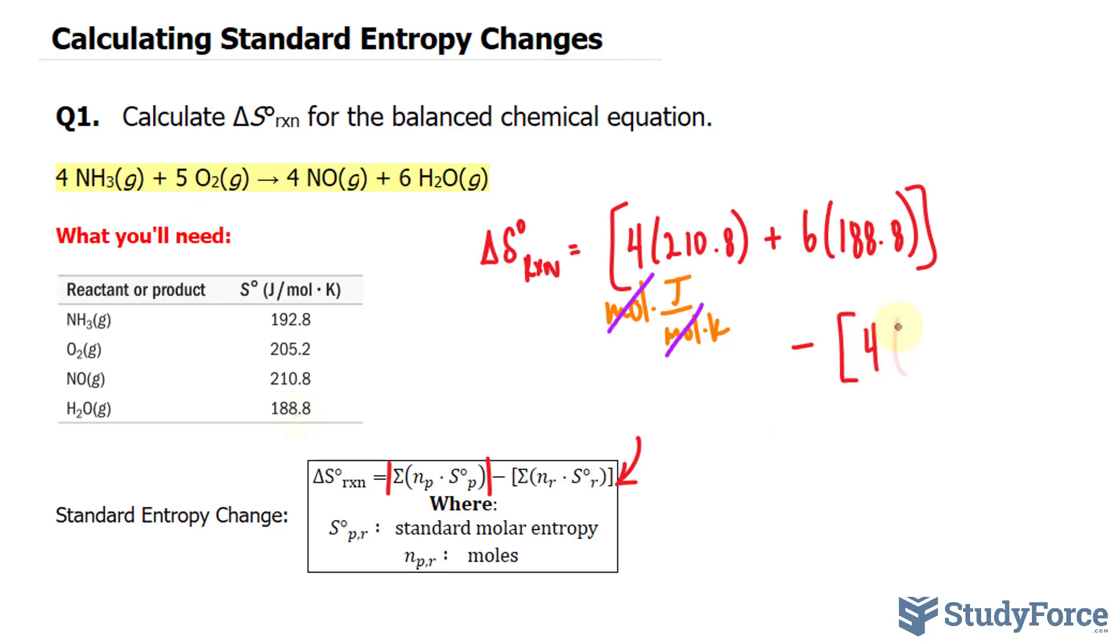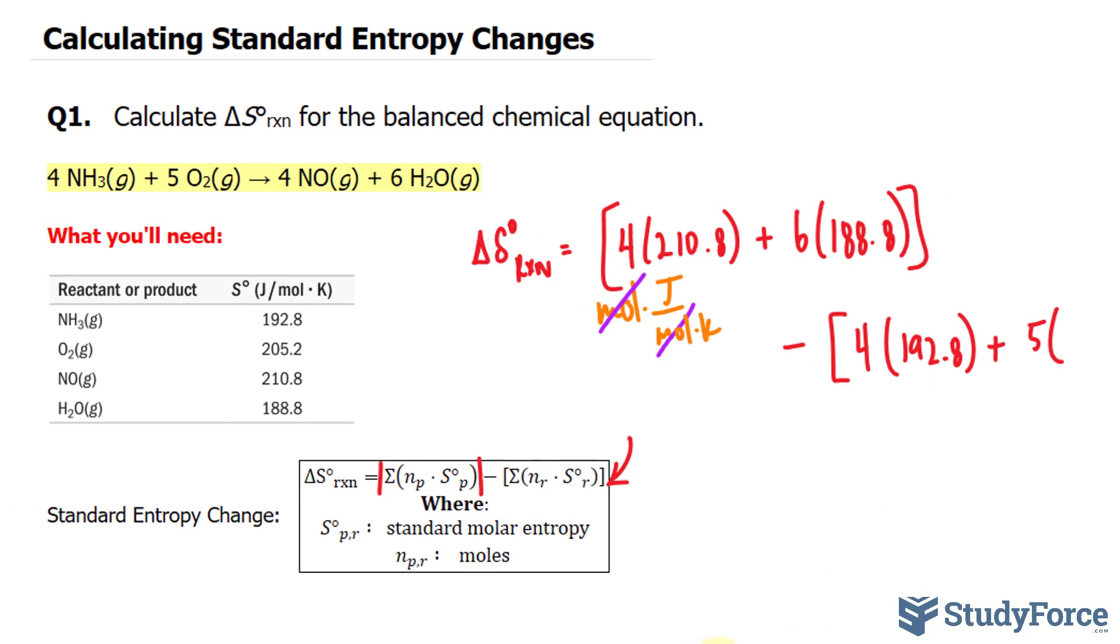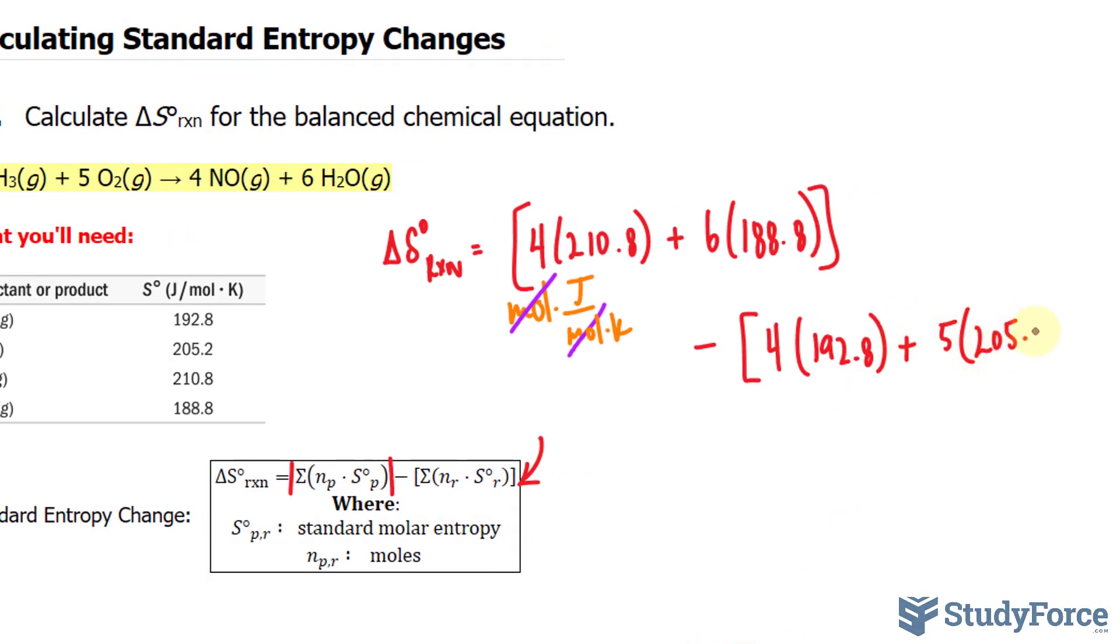Four times, focusing in on NH3, it's 192.8, plus five times that of oxygen, which is 205.2.